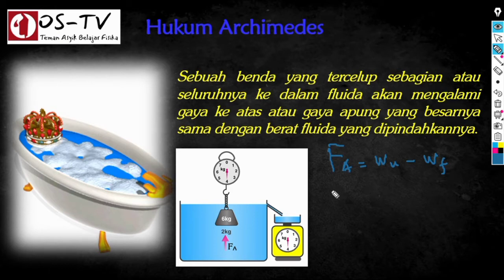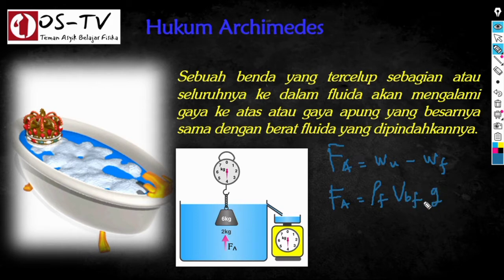Gaya ke atas ini juga dapat dituliskan dalam bentuk formulasi lain, yaitu FA = ρF × VBF × g. Dalam hal ini, ρF adalah massa jenis fluida, VBF adalah volume benda yang tercelup di dalam fluida, dan g adalah percepatan gravitasi.